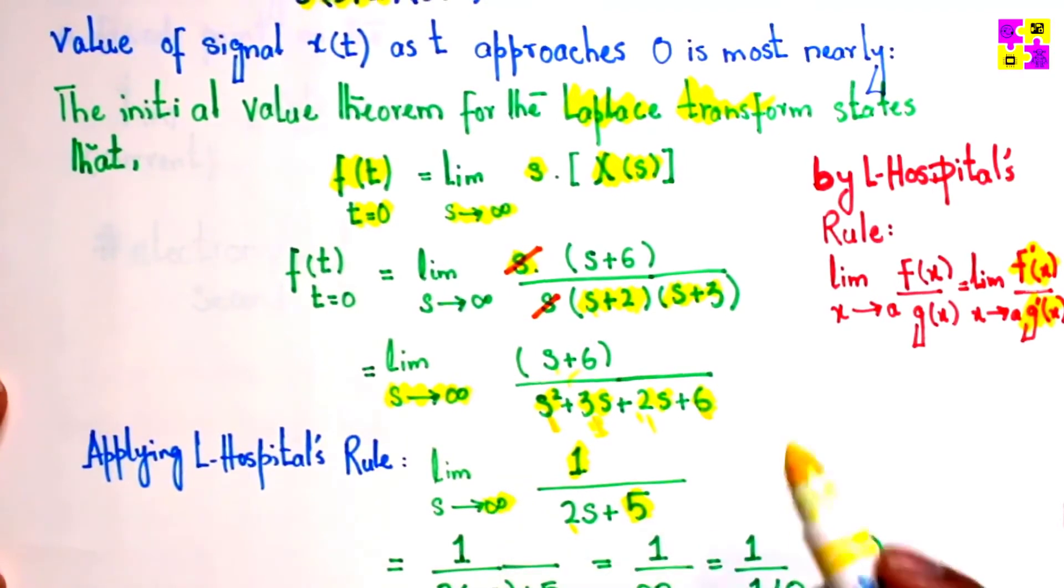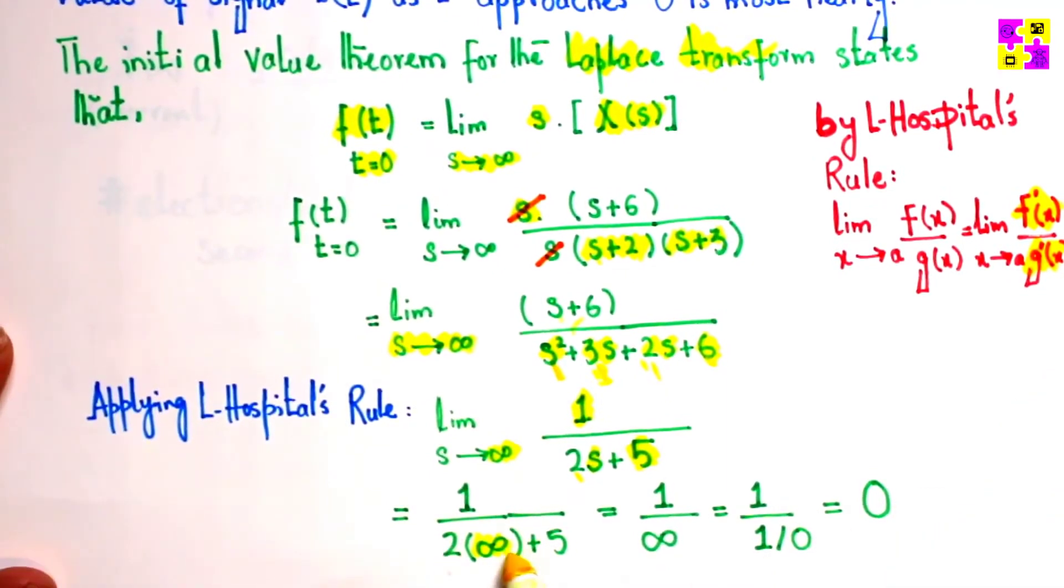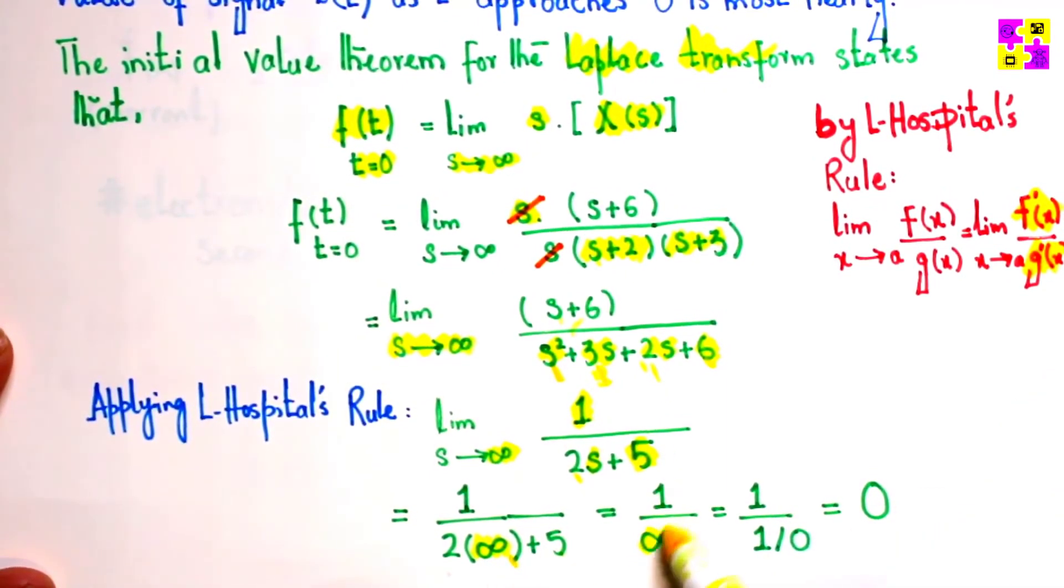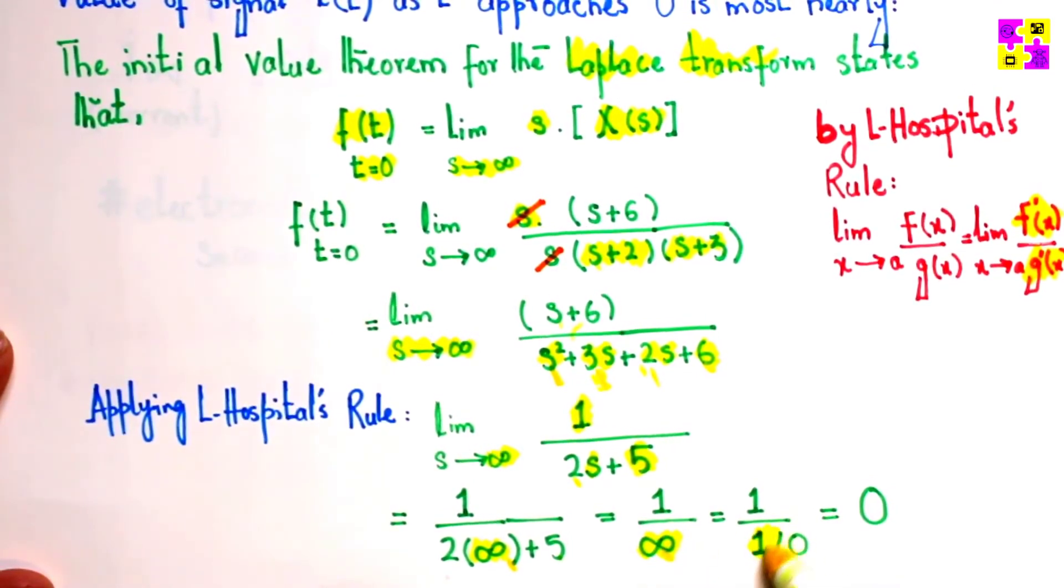Remember, s tends to infinity here. And I replace s with infinity. Now, 2 times infinity plus 5 is simply going to be infinity. And we know infinity can also be written as 1 over 0.